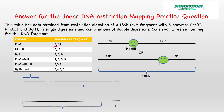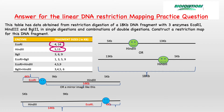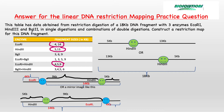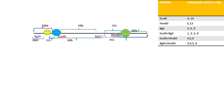Now we place EcoRI sites such that it produces 14 kb and 4 kb fragments. Now let's merge one possibility from each single digestion such that they create EcoRI-HindIII double digestion fragments. Now place BGL2 restriction sites. Since three fragments are generated upon double digestion, we expect two restriction sites from BGL2.